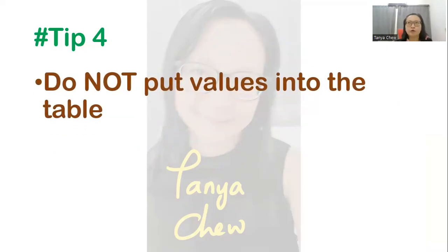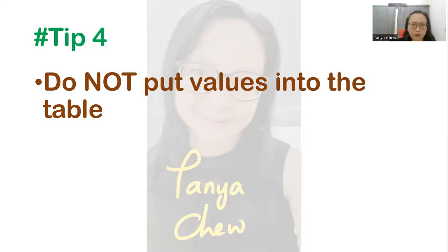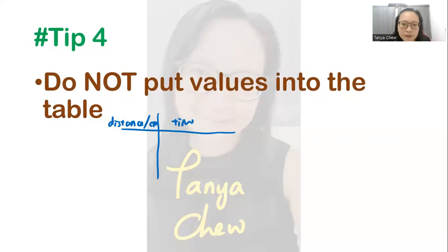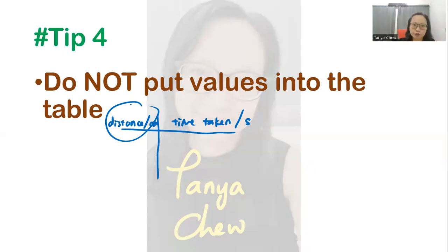Tip number four: whenever you are asked to tabulate a table, please do not put in values. You are the planner of the experiment, not the one conducting it — so you don't know what values to put in. Just draw a blank table, but make sure all the headings are there with units, for example 'distance / cm' or 'time taken / s'. Do not put in values unless you have stated values in your method — for example if you stated distances of 1 cm, 2 cm, then you may include them.